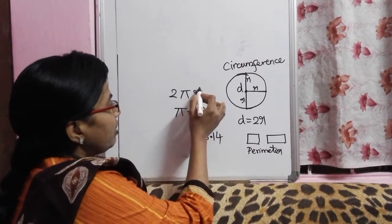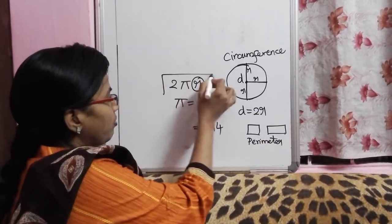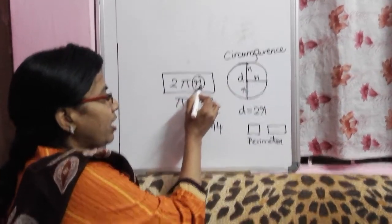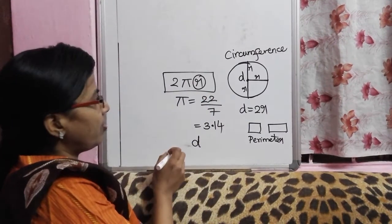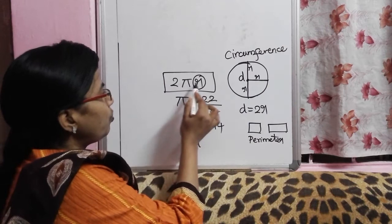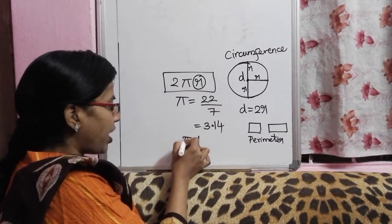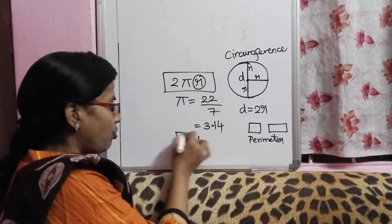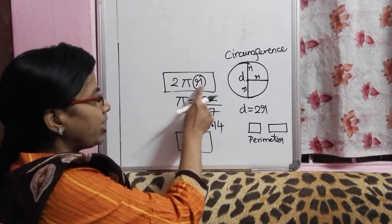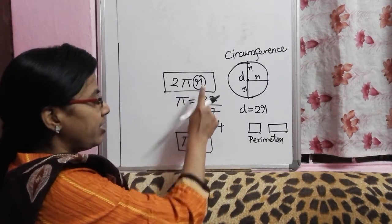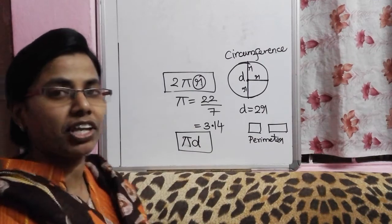If you are given the radius, the formula is 2πR. If the diameter is given, since 2R is diameter, the formula becomes πD. So: 2πR when radius is given, πD when diameter is given.